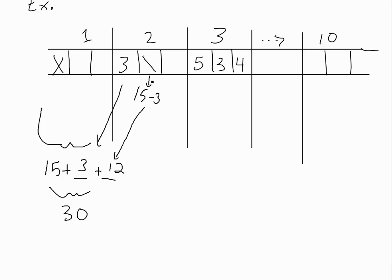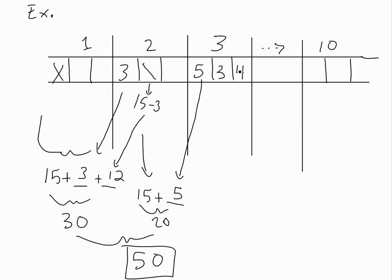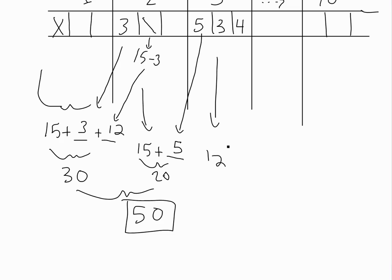For the second frame — a spare — you knocked down all pins in 2 throws, so it's 15 plus your next 1 bowl, which is the 5. That gives 20 for frame 2, so your running total is 50. For the third frame, there's no strike or spare, so you just add up the pins knocked down. Even if you knocked them all down on the third ball, it doesn't count as a spare. 5 + 3 + 4 isn't right here — it's 8 + 4 = 12. Running total becomes 62.